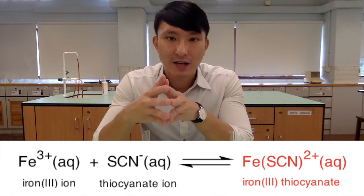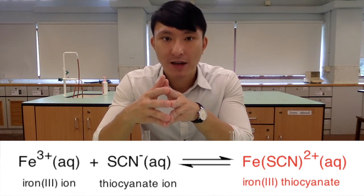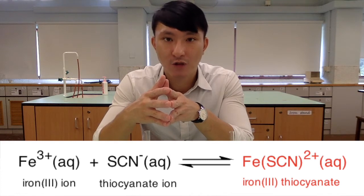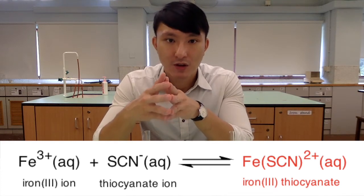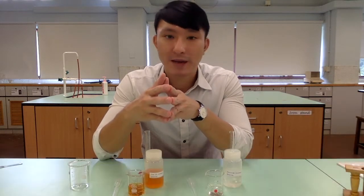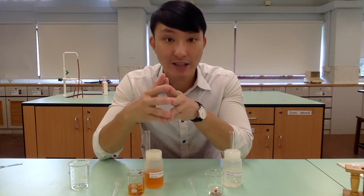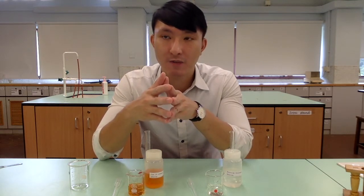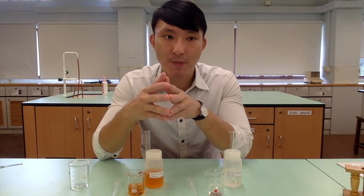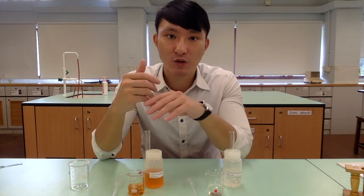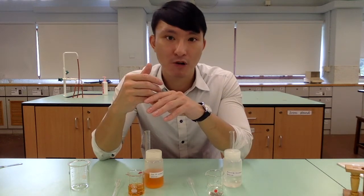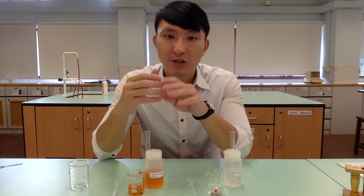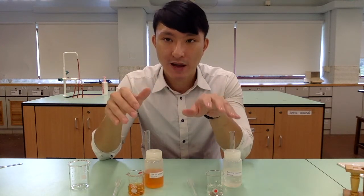Therefore, the color of the reaction mixture actually depends on the concentration of the product. So the equilibrium mixture should have a red color, but depending on the concentration of the product, it could be ranging from pale red all the way to very deep red, almost to the point where it looks like it is black. So this is the reversible reaction.